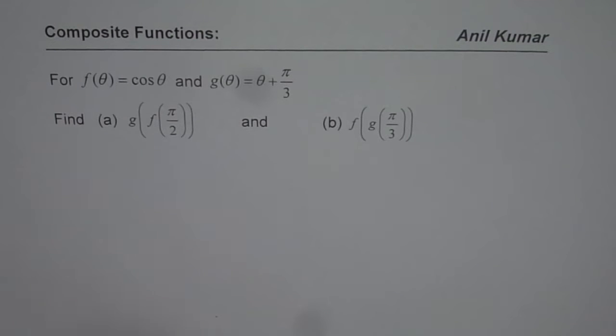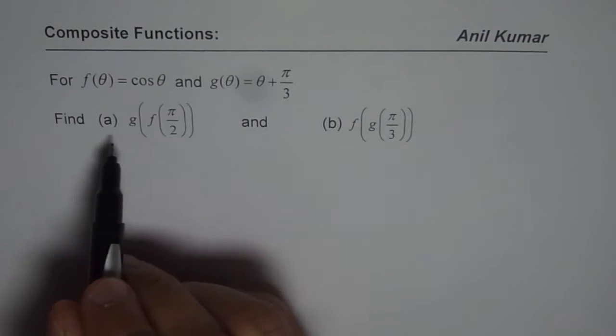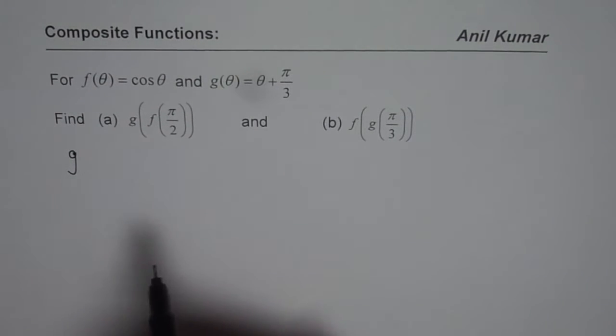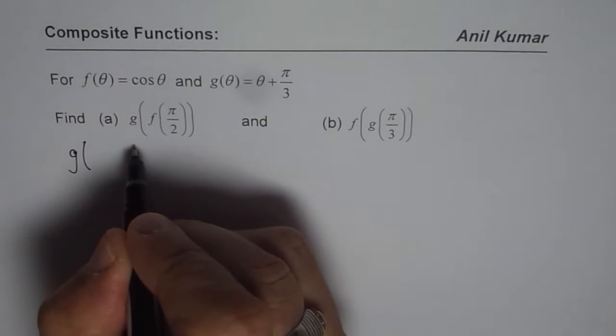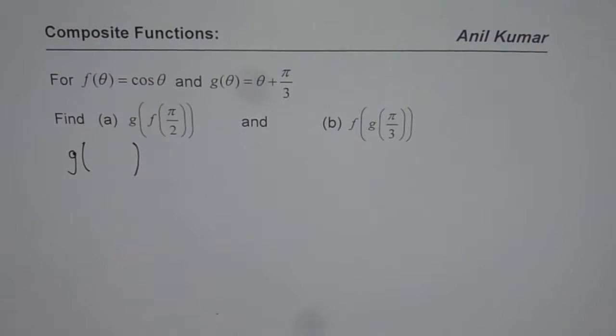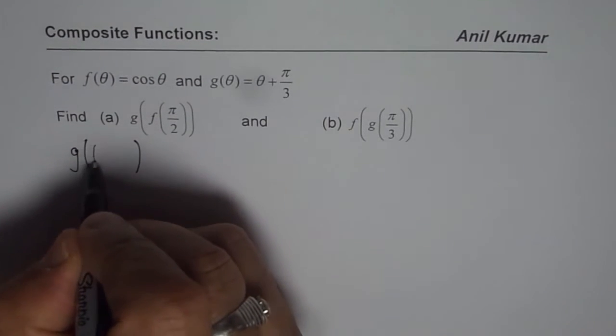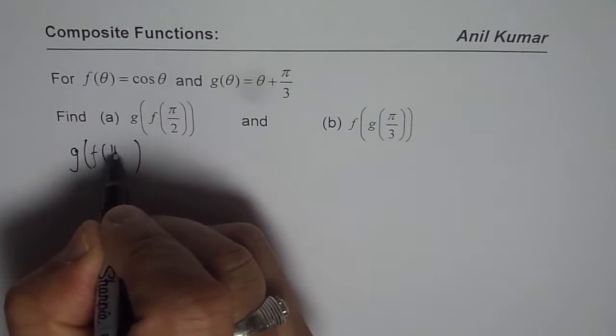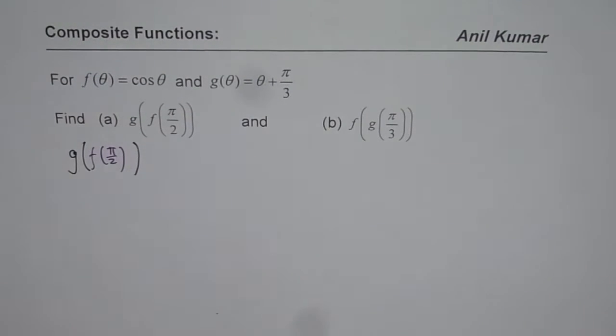As in some of the videos, we will do it in two different colors since there are two different functions to help you understand. So we have g of f(π/2), which is the composite function we need to evaluate.